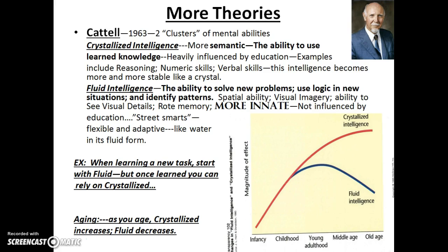Cattell, in 1963, instead of coming up with specifics, came up with two clusters of mental abilities. First, crystallized intelligence — more semantic, the ability to use learned knowledge. This is heavily influenced by education. Examples include reasoning, numeric skills, and verbal skills. He said it becomes more and more stable like a crystal as it's used more and as someone gets older.